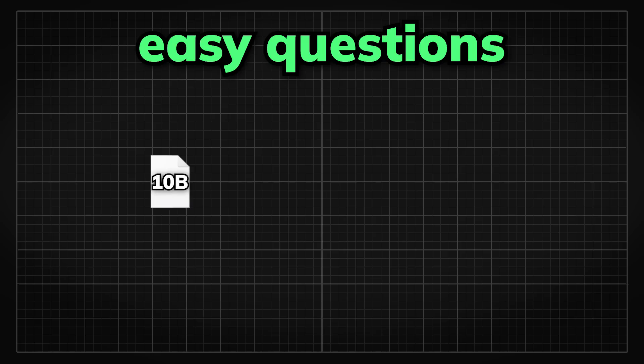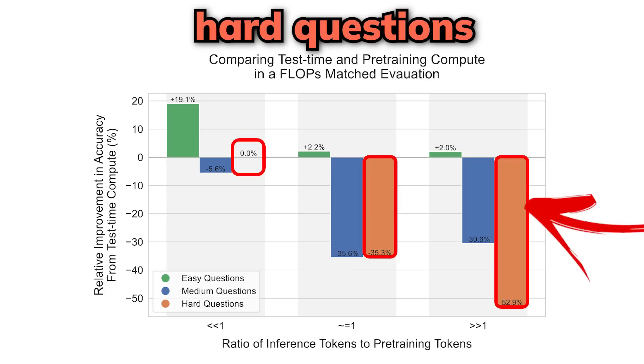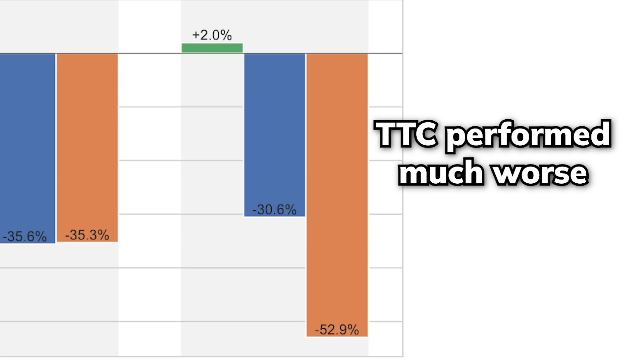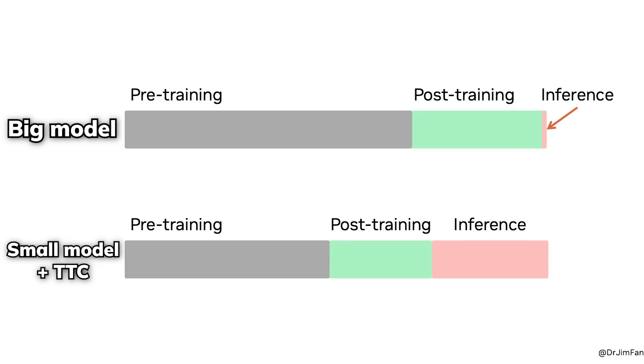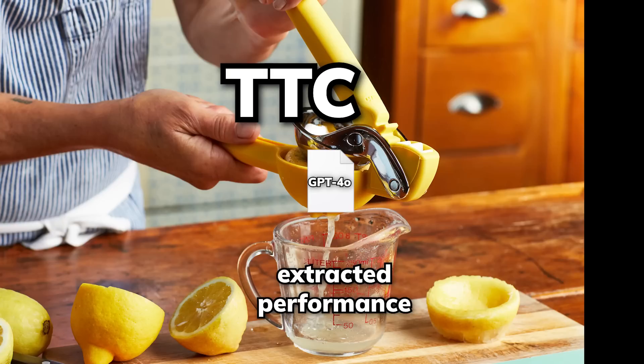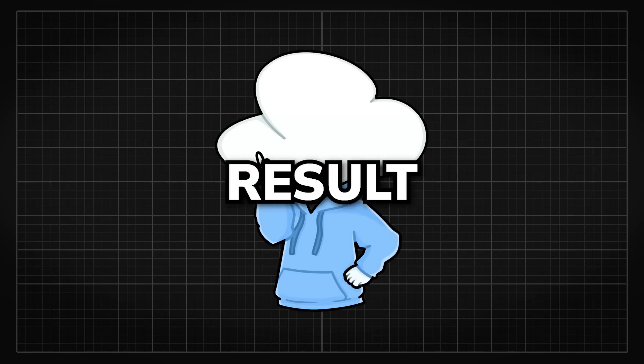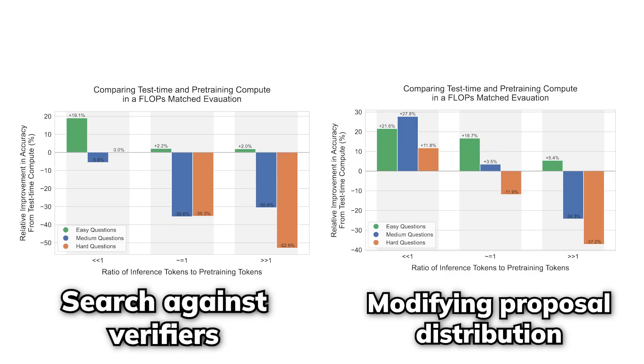The key question of their paper is, if we match the compute costs between two approaches, a small model with extra inference compute versus a large model with a standard inference compute, which one is going to be more compute efficient? In their experiment where the compute is matched, they discovered that for easier questions, using additional test time compute on a smaller model can outperform a model that is 14 times its size that is using a standard amount of inference compute, making the smaller model with test time compute more efficient in this case. But for more difficult questions, having a larger model that spend its compute on pre-training becomes more advantageous, like by a lot. Using test time compute has diminishing returns on these questions, and spending the compute on pre-training data is just more effective.